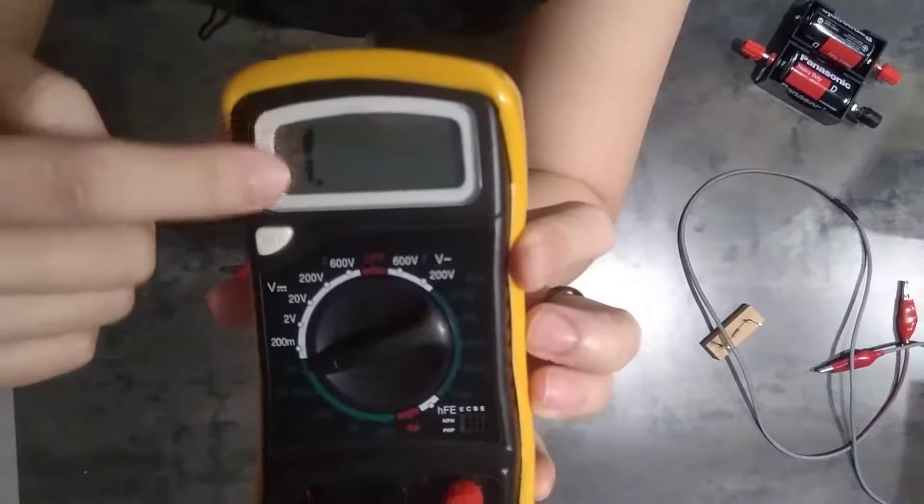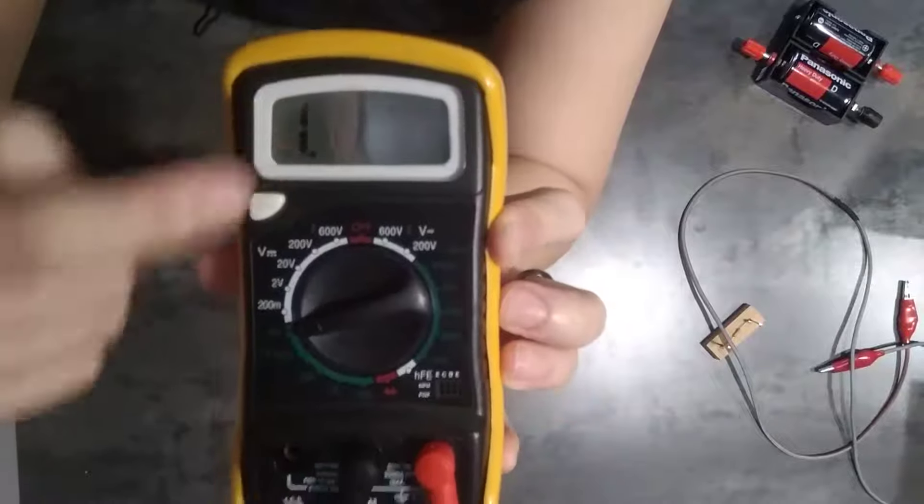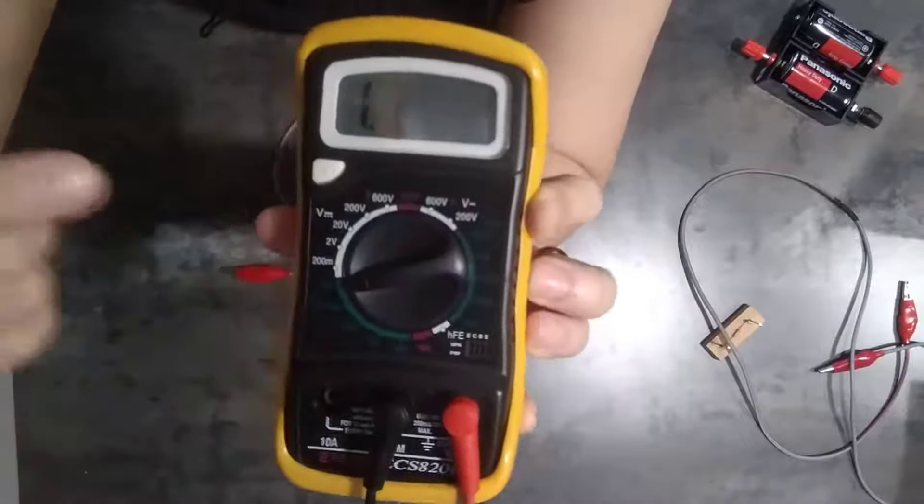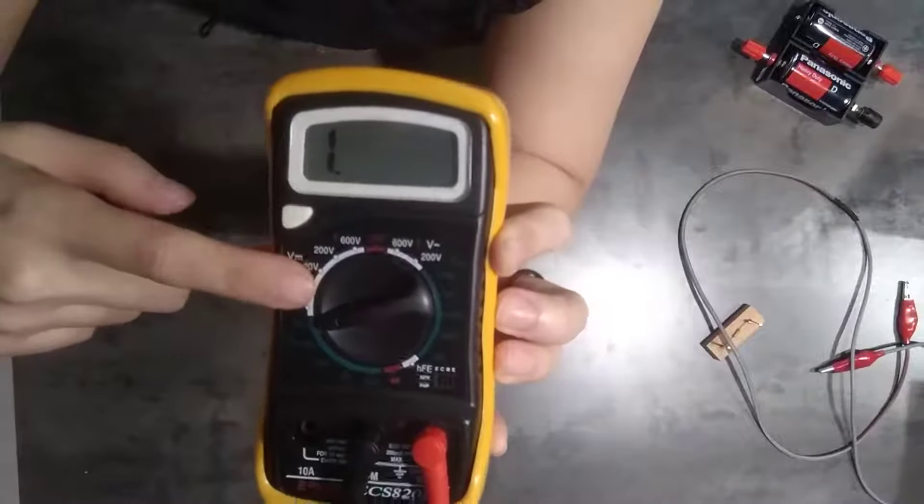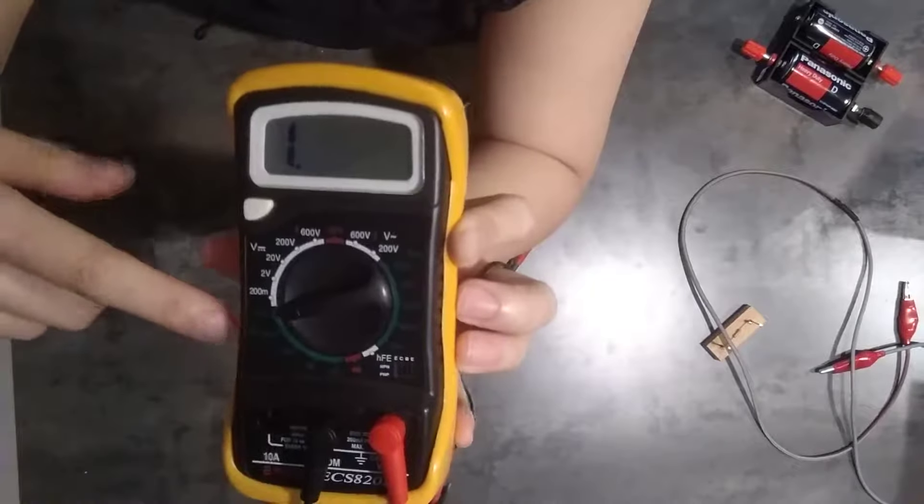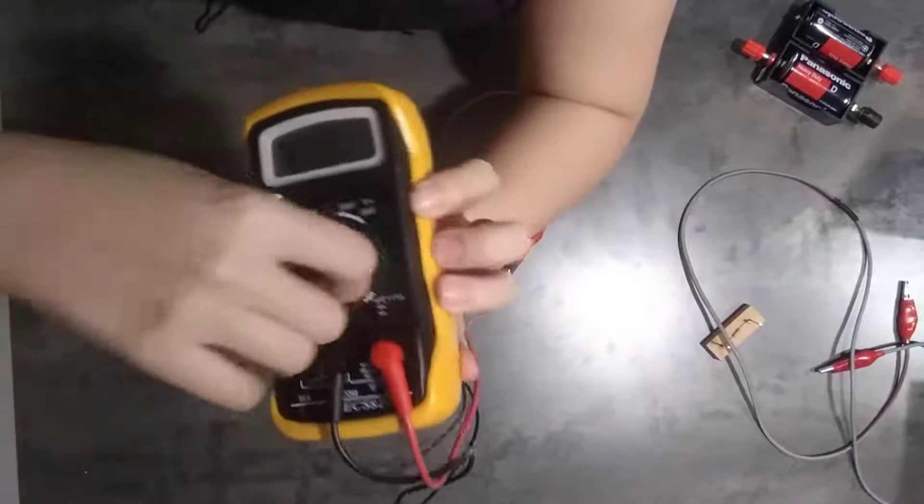Notice that this one, there's a 1 here. Whenever you see a 1, no matter where your setting is, it means that the reading is too much for the meter to read. Error in your calculator, when you take 1 divided by 0, cannot tabulate. Too big to read.